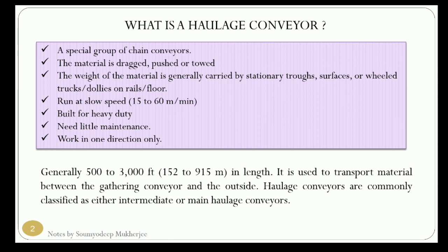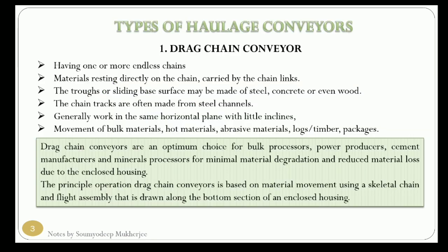One of the disadvantages of this type of conveyor is that it can work only in one direction. This type of haulage conveyor is heavy duty and the length is very high — given as 500 to 3000 feet. Haulage conveyors are very common and are used in different industries.